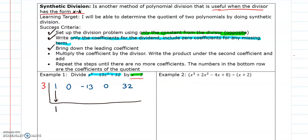Now we're going to multiply the coefficient by the divisor and then place it underneath the next coefficient. So 3 times 1 is going to give you 3. And then you add. So I'm going to add those two terms. So 0 plus 3 gives me 3. Then we repeat these steps until there are no more coefficients, and the numbers in the bottom row are the coefficients of your quotient at the end.